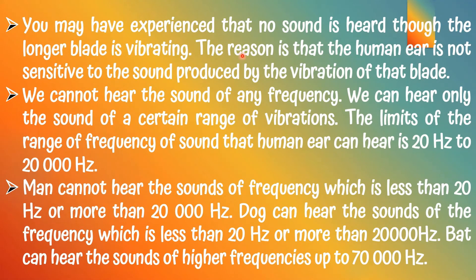You may have experienced that no sound is heard even though a longer blade is vibrating. The reason is that the human ear is not sensitive to the sound produced by the vibration of that blade. We can hear only sounds within a certain range of frequency. The range that the human ear can hear is 20 Hertz to 20,000 Hertz. Dogs can hear sounds of frequency less than 20 Hertz or more than 20,000 Hertz, up to higher frequencies of 70,000 Hertz.